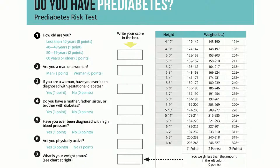Question two: are you a man or a woman? One point for a man and zero points for women — though stay tuned, it continues for women, so they're not out of the woods yet. Question three: if you are a woman, have you ever been diagnosed with gestational diabetes? Give yourself one point for yes and zero points for no.